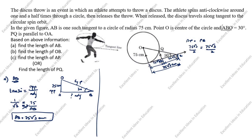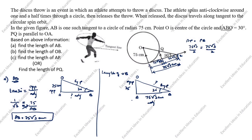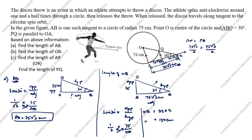Next, we find the length of OB. Drawing triangle OBA, we know OA = 75 cm and AB = 75√3 cm. The angle at B is 30 degrees; OA is opposite and OB is the hypotenuse. Using sin 30 = opposite/hypotenuse: 1/2 = 75/OB. Cross-multiplying, OB = 75 × 2 = 150 centimeters.